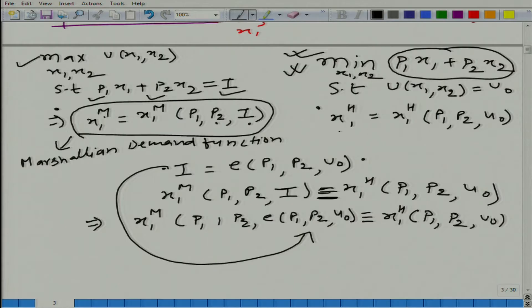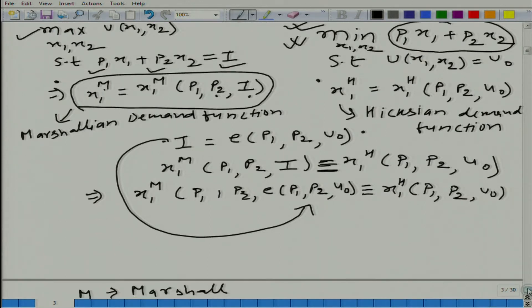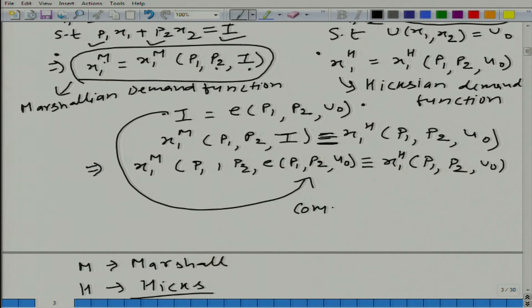And this is called Hicksian demand function. And Hicksian demand function is also called compensated demand function.